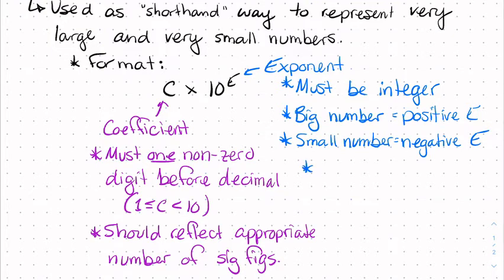And small numbers have negative exponents. Note that this exponential portion, 10 to the E, whatever E may be, since our exponent is always an integer, this is considered an exact value. As we discussed in the previous lesson, exact values are considered to have infinite sig figs.